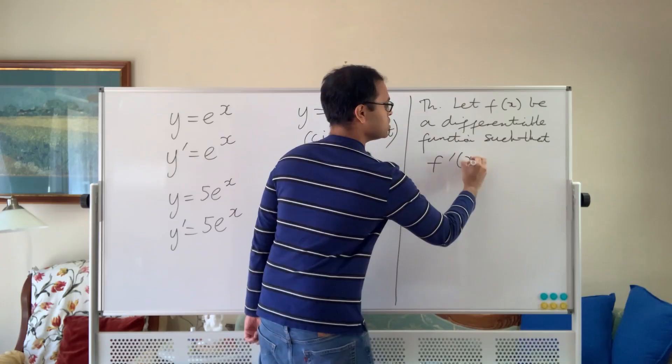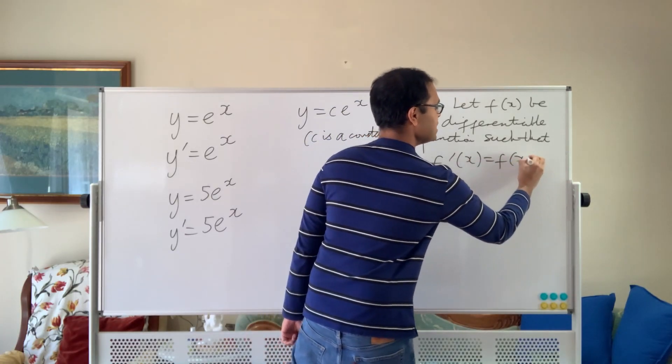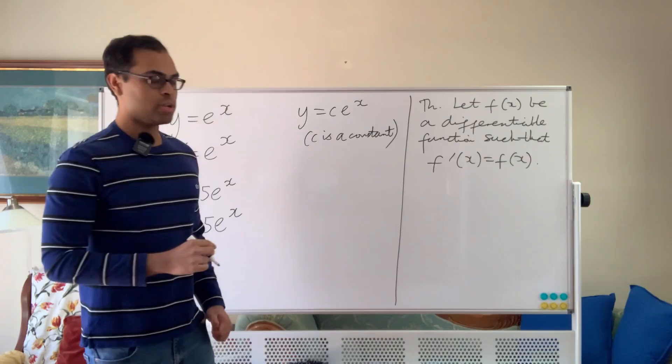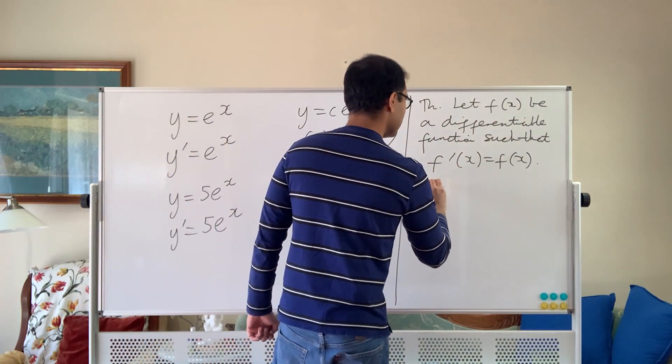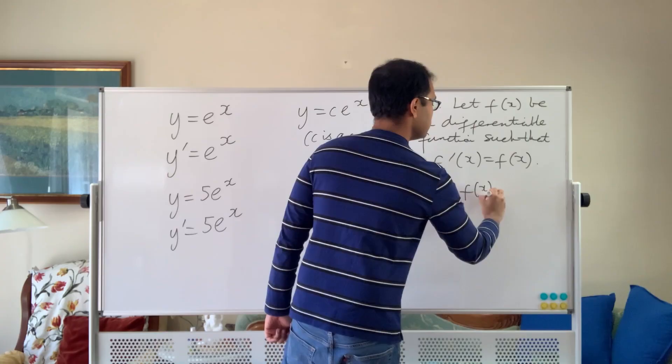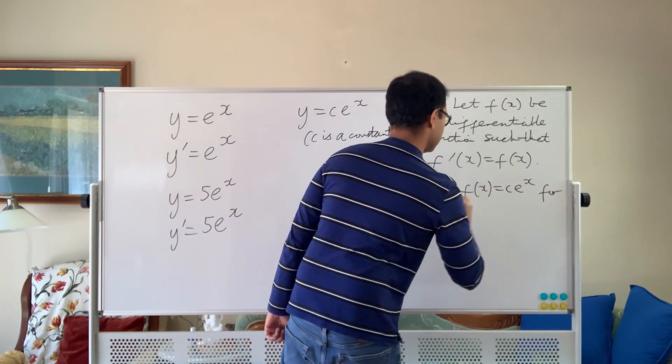f prime of x is equal to f of x. So f is equal to its own derivative. Now why is it true that f of x is a constant times e to the x? That's what we're going to prove. So if this is true, then f of x is going to equal c e to the x for some constant c.